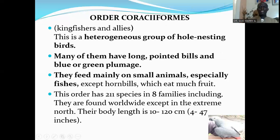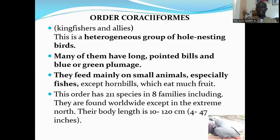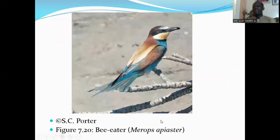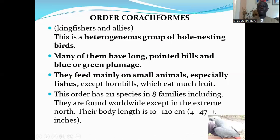The next order is Order Coraciiformes, which has the kingfishers and allies. This is a heterogeneous group of hole-nesting birds. Many of them have long, pointed bills and blue or green plumage. They feed mainly on small animals, especially fish, except for some that eat much fruit. This order has 211 species in eight families, including the kingfishers. They are found worldwide except in the extreme north. Their body length is 10 to 120 centimeters. Here is the bee-eater, also among those in Order Coraciiformes.